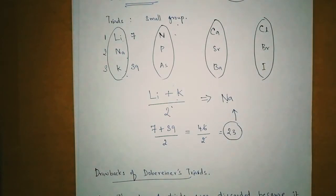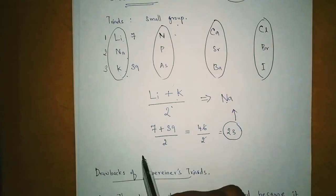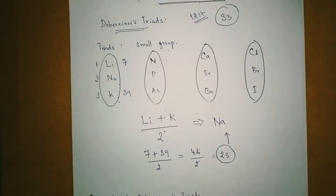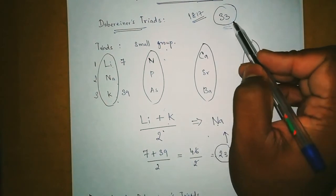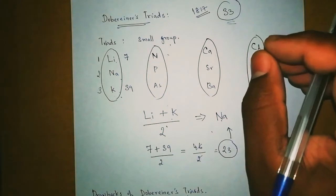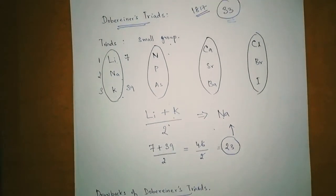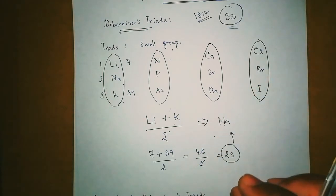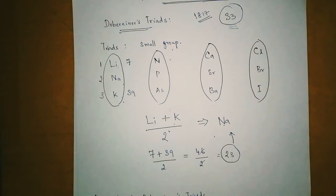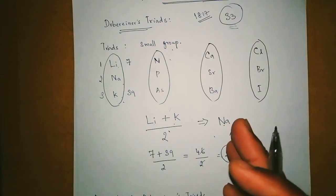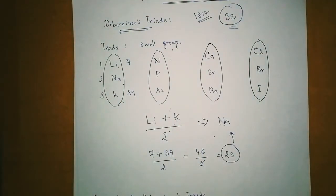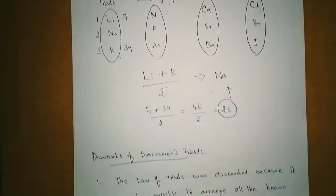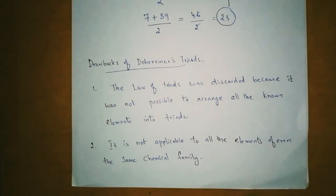Like the same way, he did this for all these groups of elements. But surprisingly, it worked for only very few elements — this technique was not applicable for all elements. All 33 elements known at the time — this did not work for all of them. Even so, we need to appreciate Dobereiner as the first person who initiated this work when no one had even thought about arranging the periodic table.